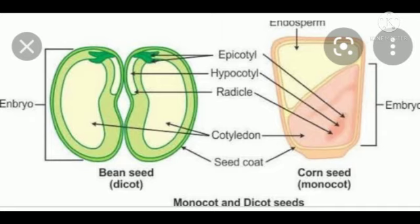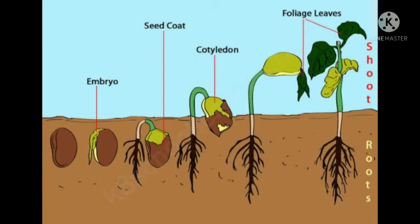The bean seed is a dicot because it contains two cotyledons, as shown by the arrows. The maize plant has only one cotyledon, so it is called a monocot. Some examples of monocot seeds are maize, wheat, rice, and onion. Some examples of dicot seeds are gram, pea, and beans.